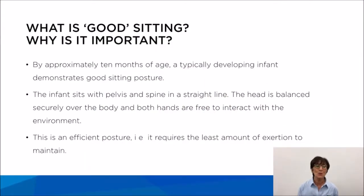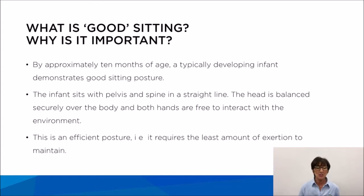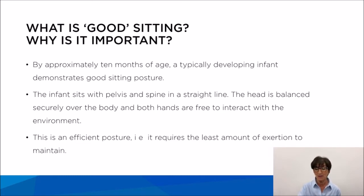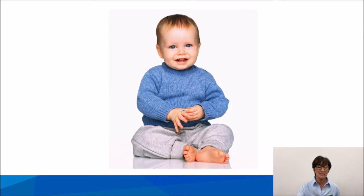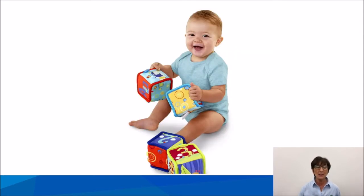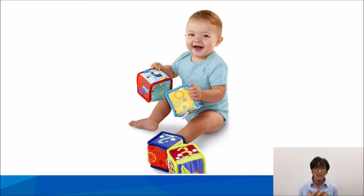So what is good posture and why is it important? By approximately 10 months of age, a child will develop a very good sitting posture. The child will sit with spine and head in midline, the head is balanced securely over the body, and the hands and feet are free to interact with the environment. This is a very efficient posture and requires the least amount of effort to maintain. The child can sit in a nice upright position, play, reach out for a toy, bring it back to midline and not fall over.